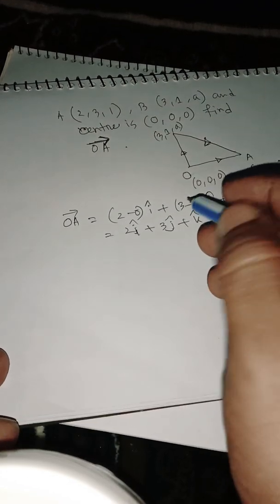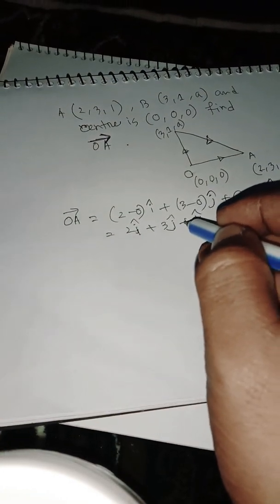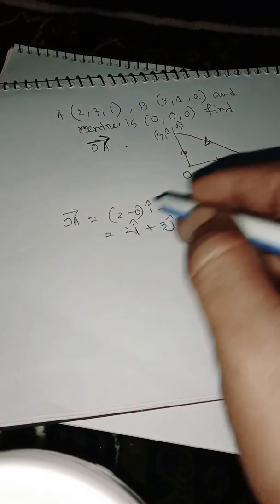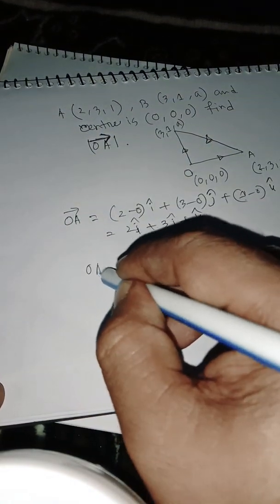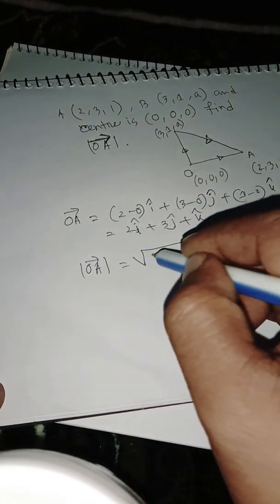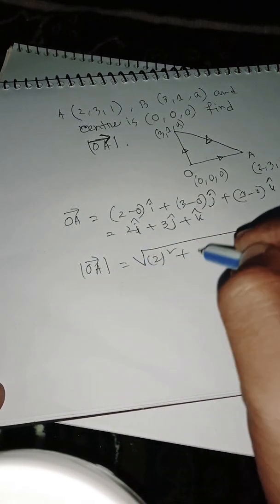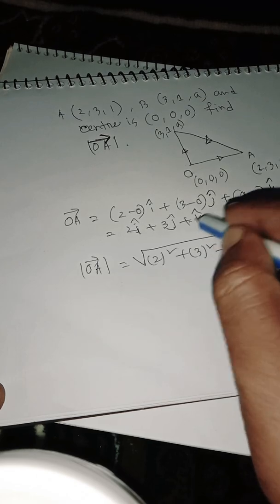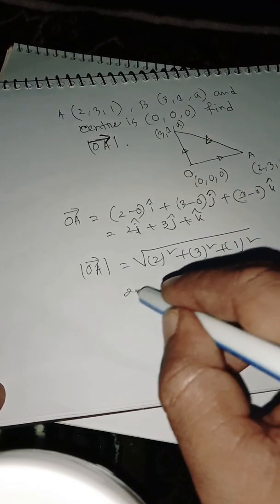The magnitude of OA vector equals the square root of (2 squared plus 3 squared plus 1 squared), which is square root of (4 plus 9 plus 1).